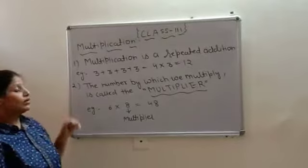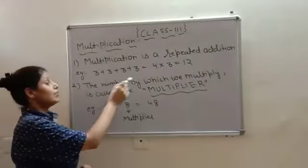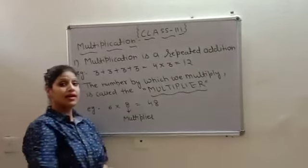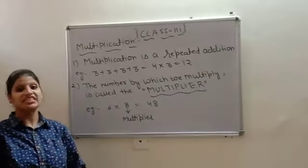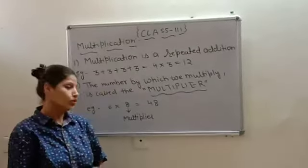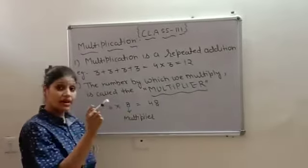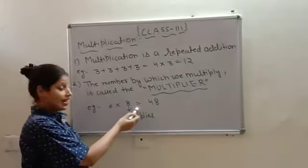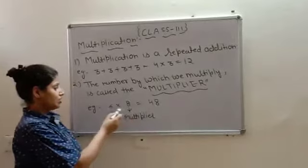Now the second rule says, the number by which we multiply is called the multiplier. That means, for multiplier, at least or minimum, we require 2 numbers. So, the second number or the number by which you multiply is called the multiplier.